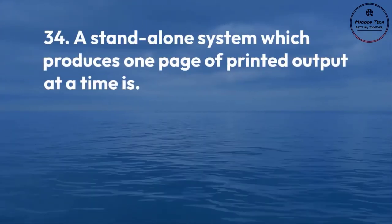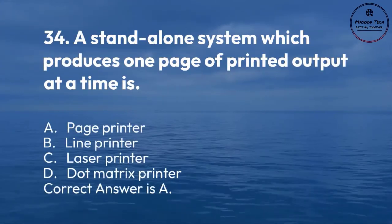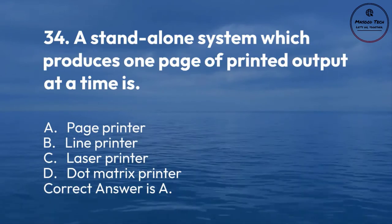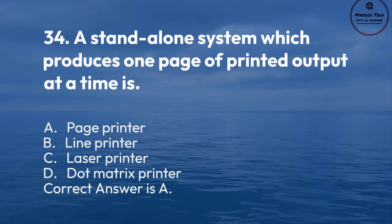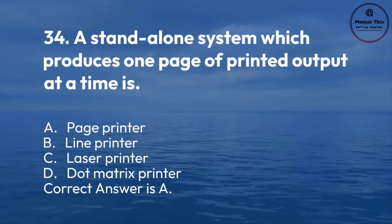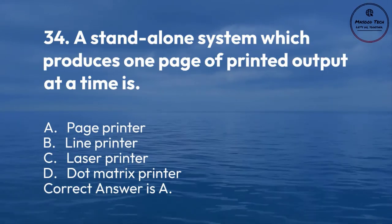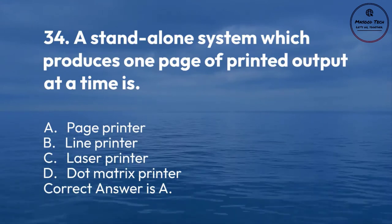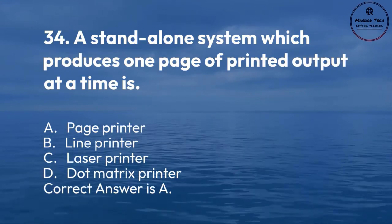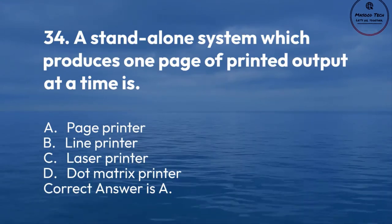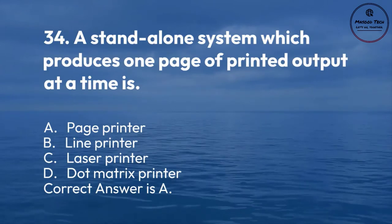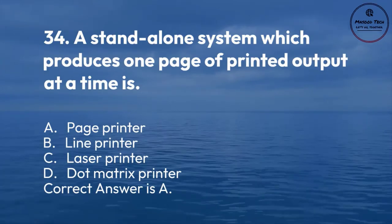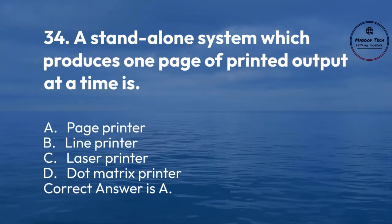Number 34. A standalone system which produces one page of printed output at a time is: A. Page printer. B. Line printer. C. Laser printer. D. Dot matrix printer. Correct answer is A.